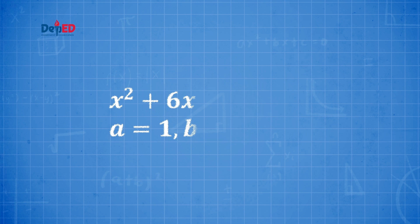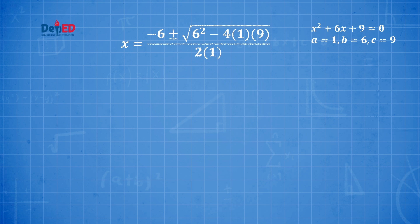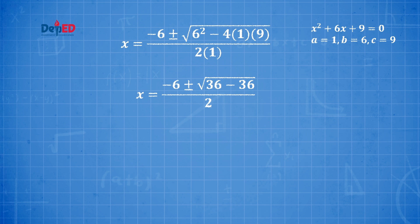We go through the same process for the second equation in the pair, which is x² + 6x + 9 = 0. Here, a = 1, b = 6, and c = 9. Substituting: x = (−6 ± √(6² − 4·1·9)) / (2·1). Simplify: under the radical sign, 36 − 36 appears, because 6² = 36, decreased by the product of 4, 1, and 9, which equals 36. The denominator becomes 2 since 2 × 1 = 2.